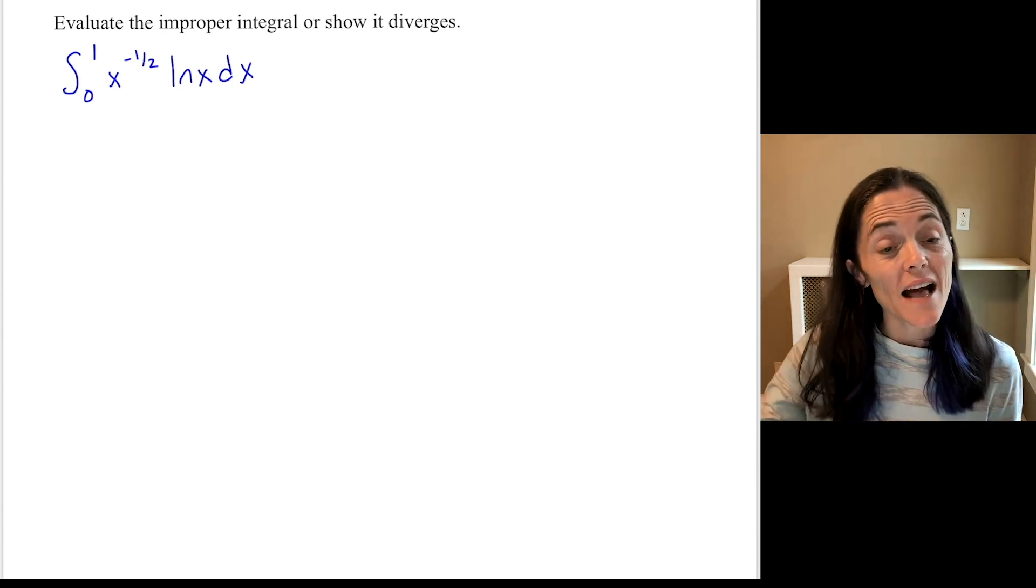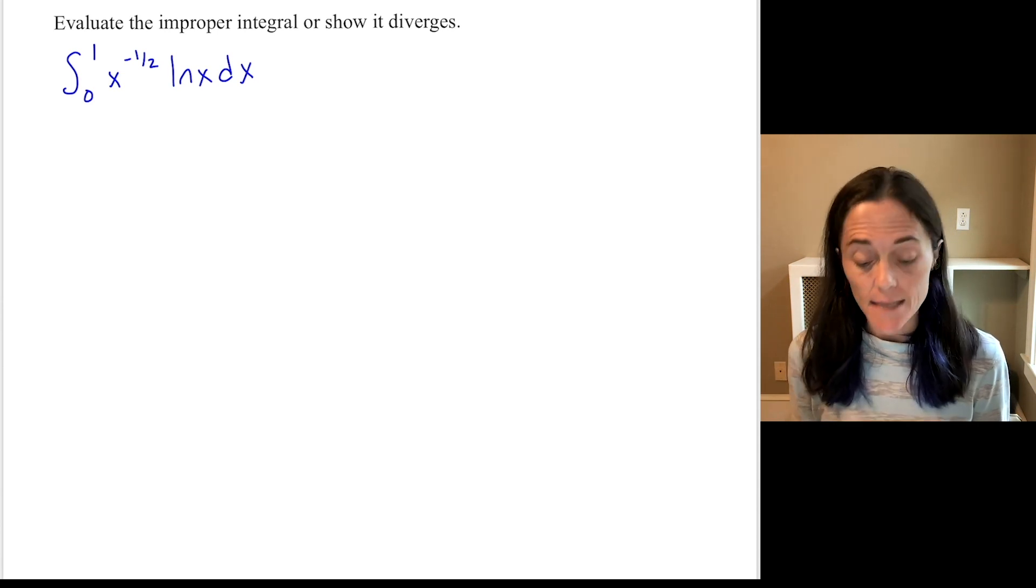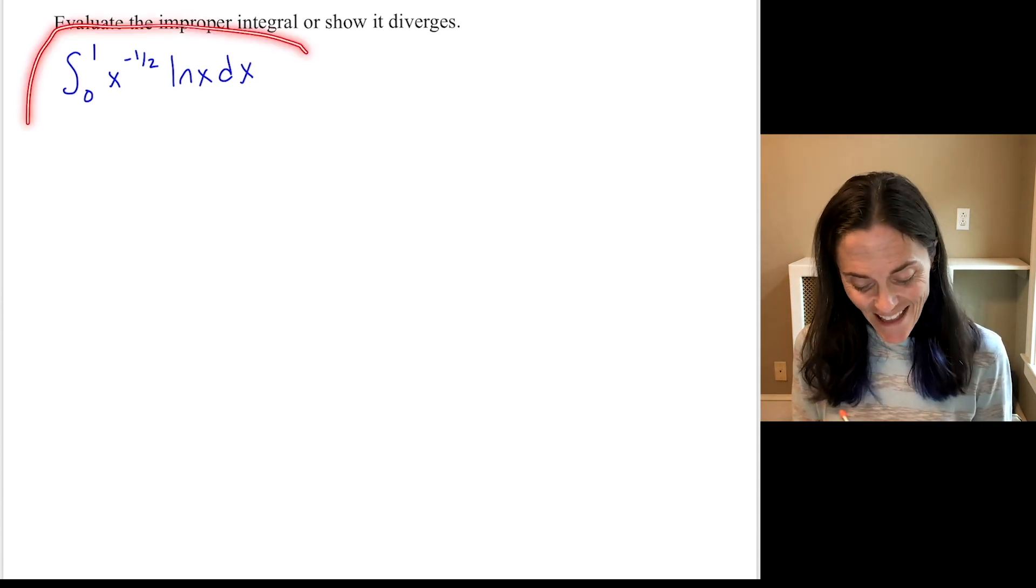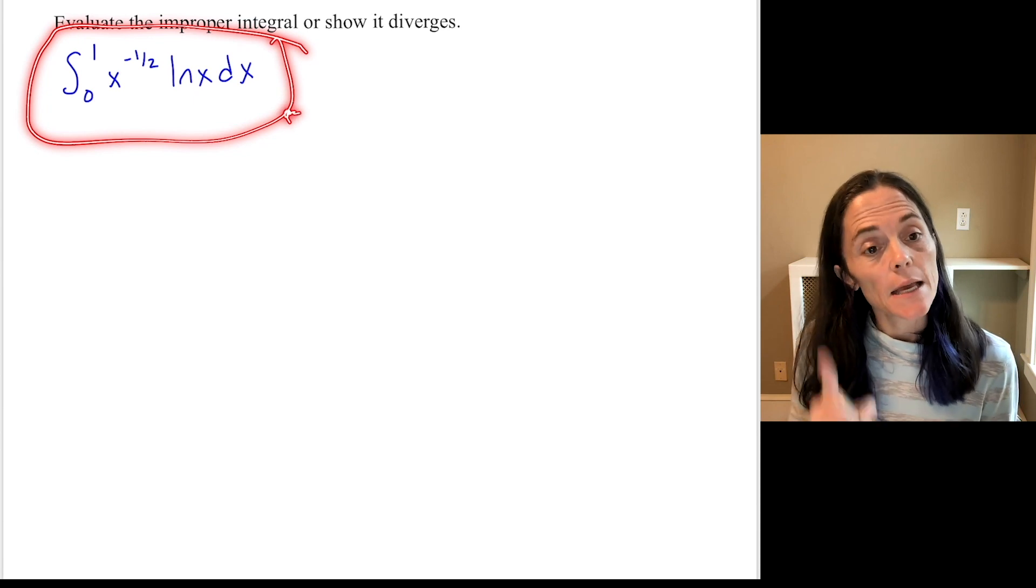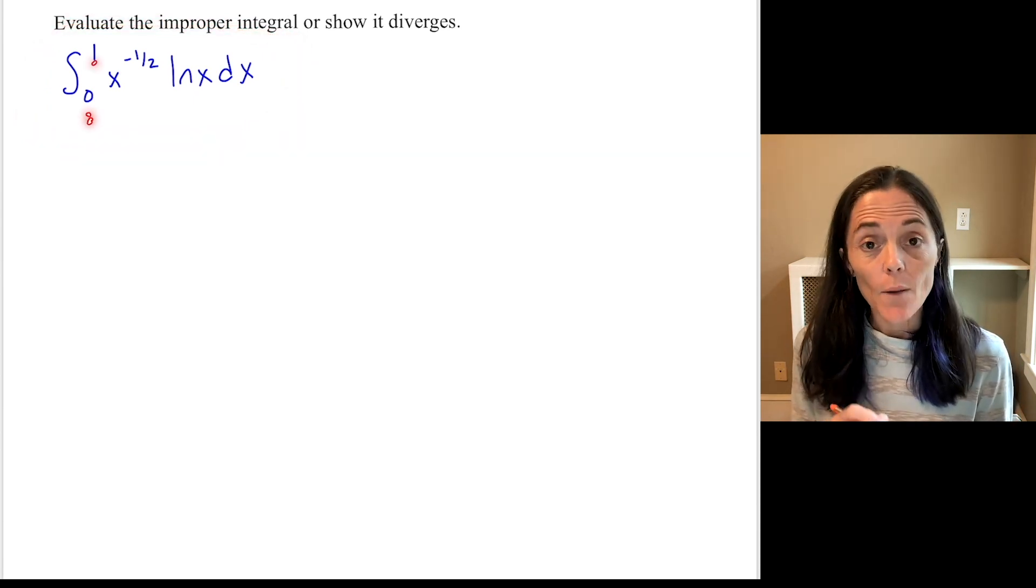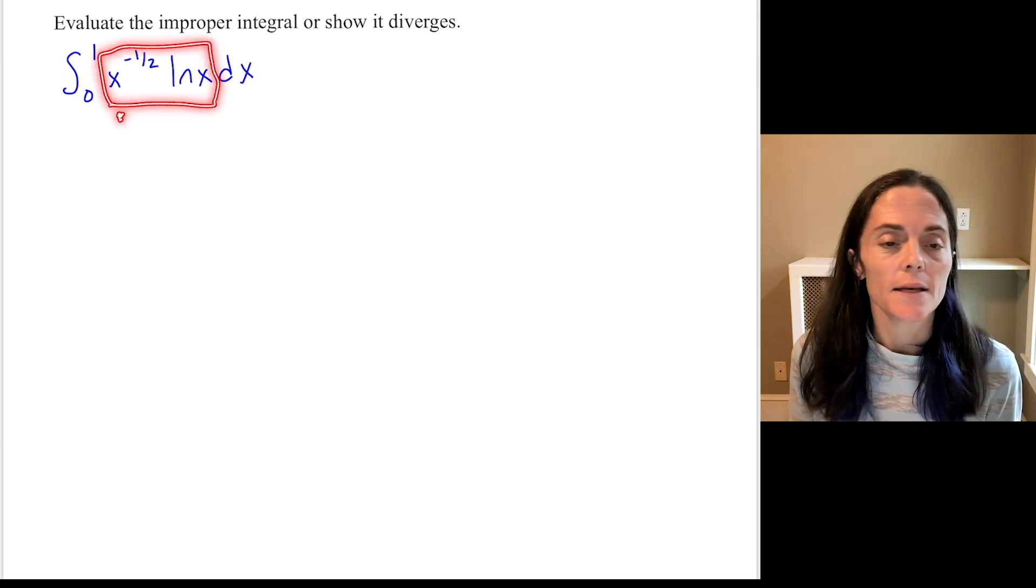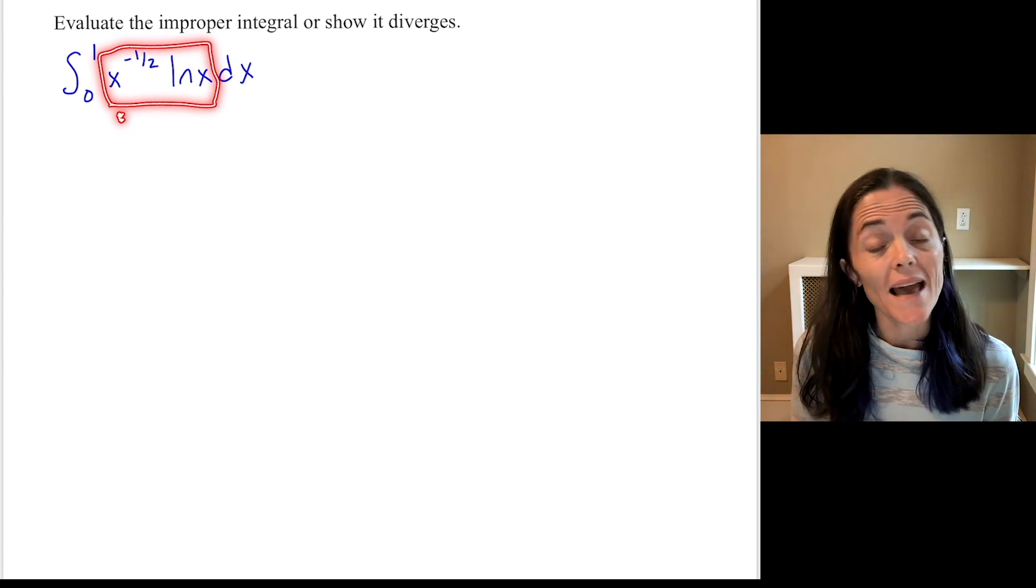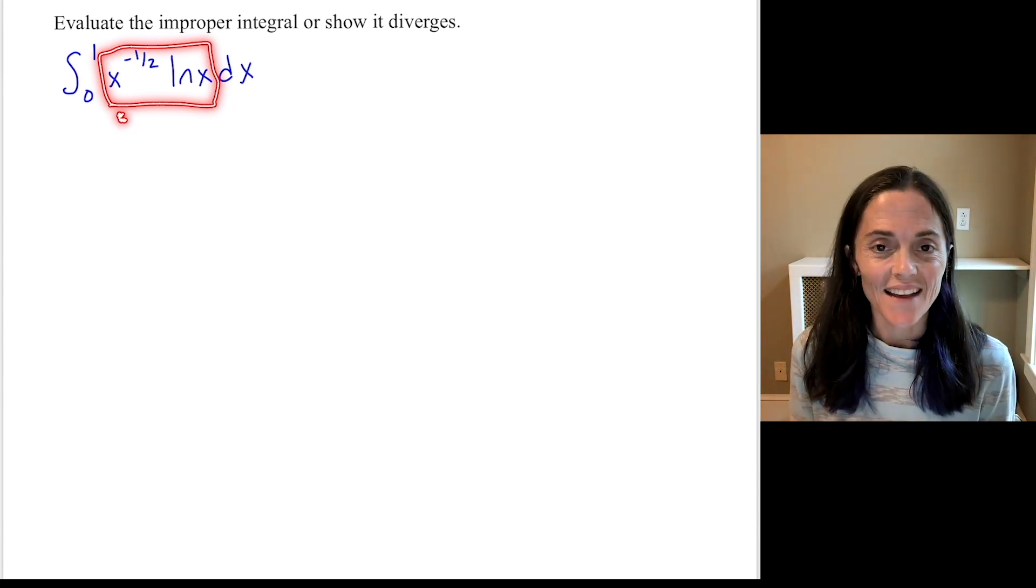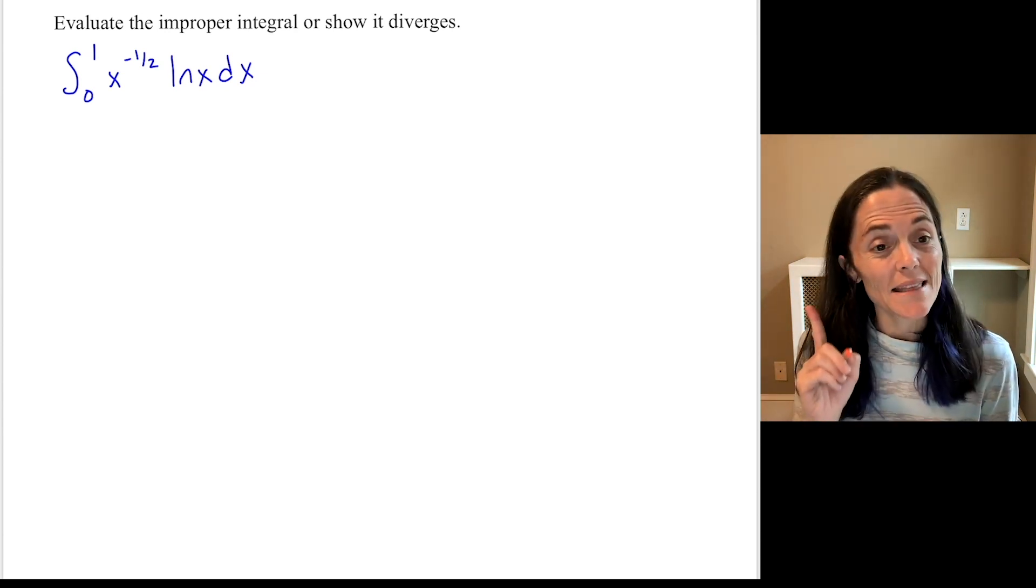Here's an example where we will evaluate this improper integral or show that it diverges. If you quickly look at this integral, it looks definite because we see numbers for limits of integration. However, if you look carefully here, this integrand is unbounded at x equals 0. So we have an infinite discontinuity here, and this is a type 2 improper integral.